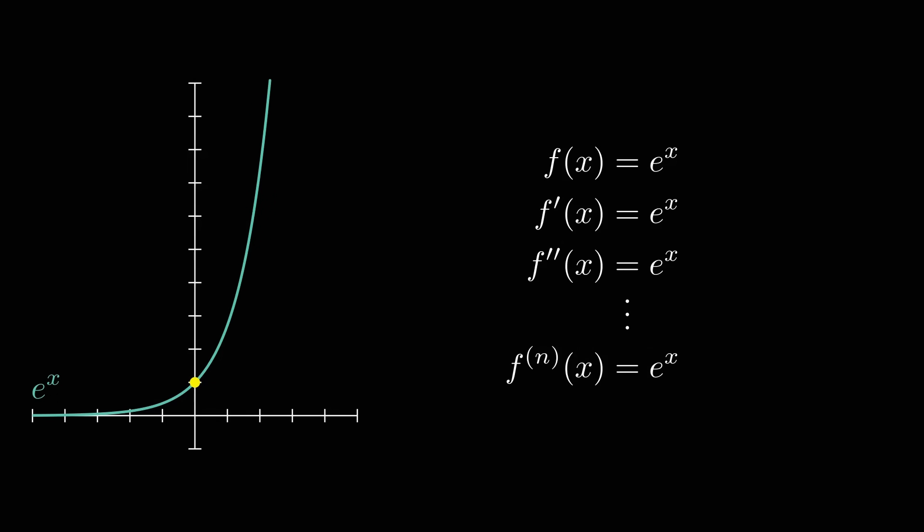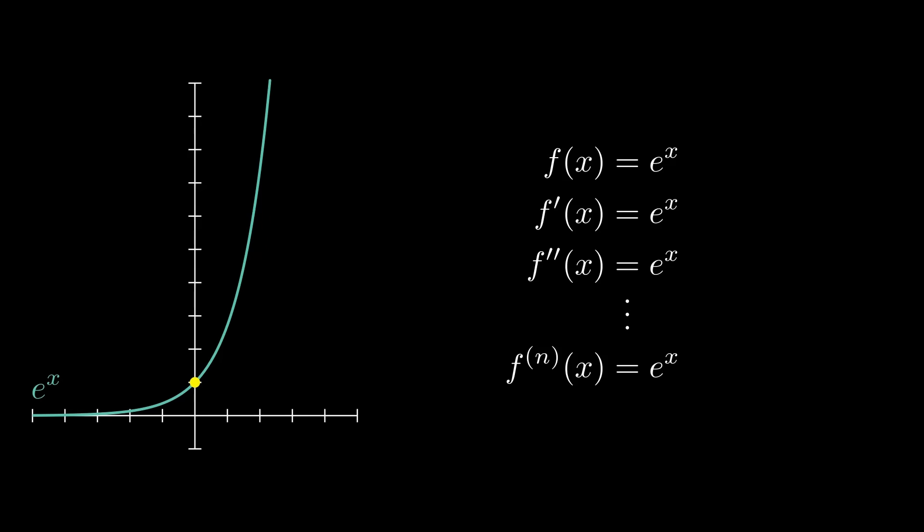And last but not least, we'll approximate E to the X as a Taylor polynomial, writing on just a few terms. And luckily, this is easier because the derivative of E to the X will always be E to the X no matter how many times you differentiate it. So at zero, it'll always be one. So this makes applying Taylor's formula very easy.